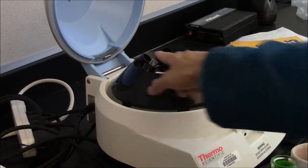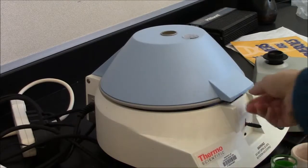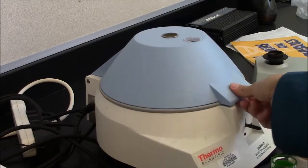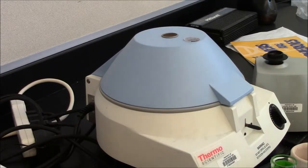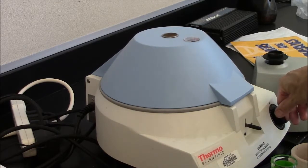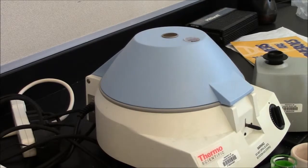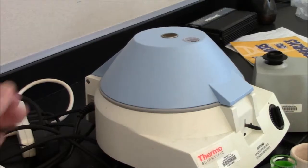To operate the centrifuge, I put my tubes in, close the lid, make sure it's securely closed. Then I turn the dial. It's a timer in minutes. It's now speeding up.